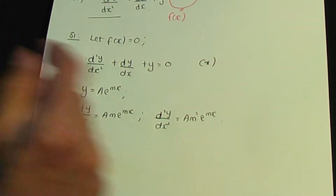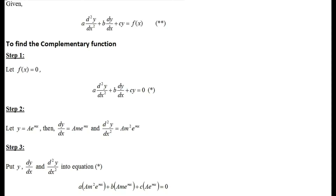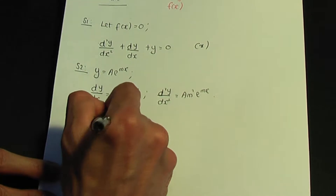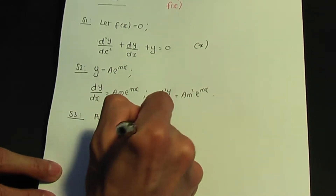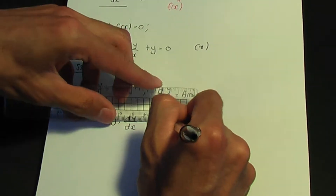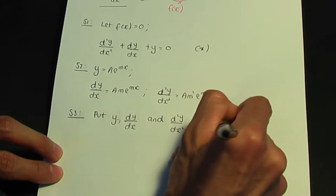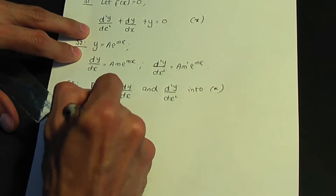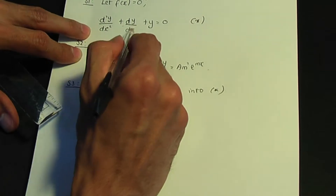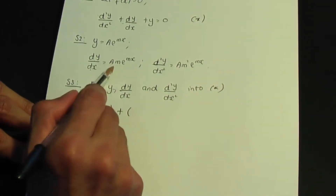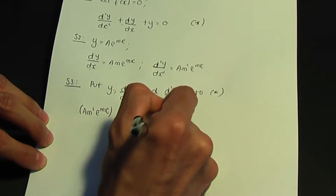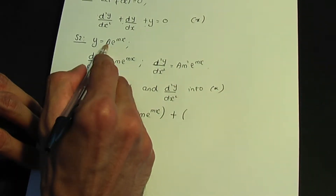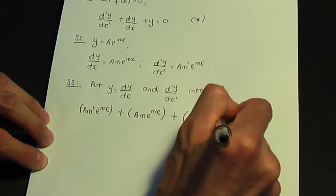Step three: put the results for y, dy/dx, and d²y/dx² into equation star. So substituting in, we have Am²e^(mx) + Ame^(mx) + Ae^(mx) = 0.